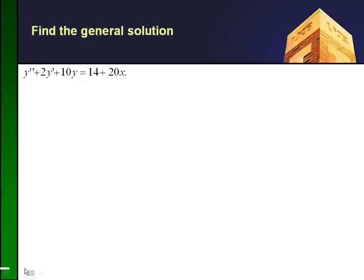All right, so now let's find the general solution to y double prime plus 2y prime plus 10y equals 14 plus 20x. We'll notice in this problem, aside from the natural component, that we actually have a forcing.